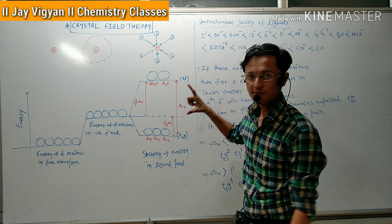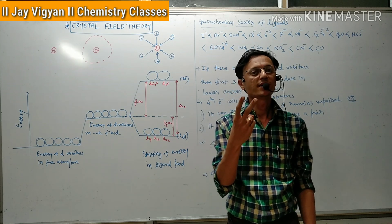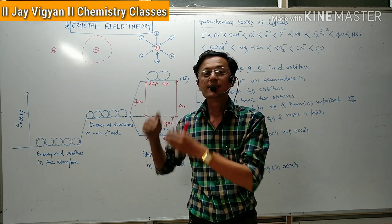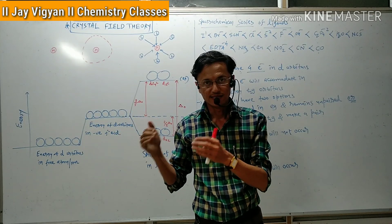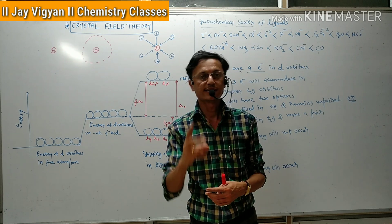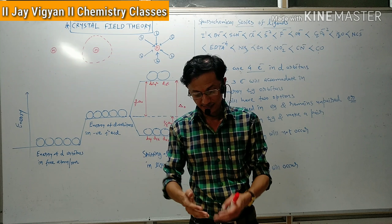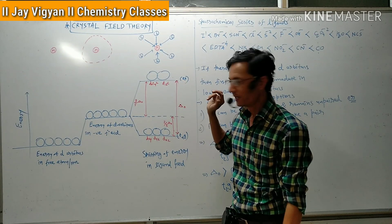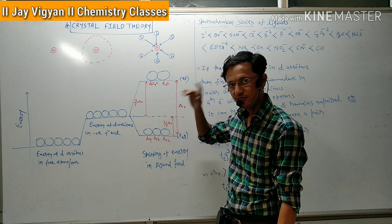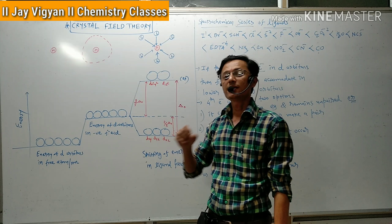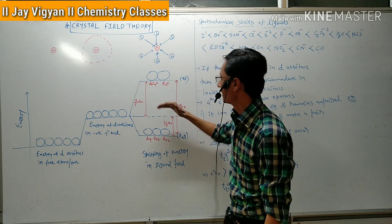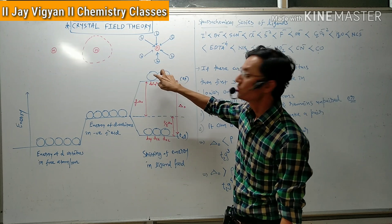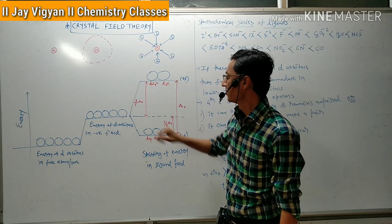Why does splitting happen? The reason is very simple. The 2 d-orbitals which lie on the axis will have maximum repulsion with the electrons of the ligand. Therefore, the dx²y² and dz² orbitals, which have maximum repulsion, their energy will increase. These higher energy d-orbitals are named as eg orbitals. The energy of these 2 d-orbitals is increased by 3/5 delta O, which means 0.6 delta O.